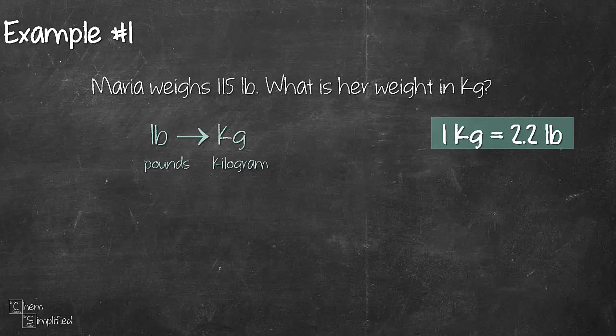To perform the conversion, let's start with what we are given which is 115 pounds. Then we multiply and draw a line across. Now what we're gonna do is we're gonna use basic algebra to do the conversion. So since we are converting from pounds to kg, that means we want to get rid of pounds. So we'll place pounds which is lb on the bottom and then we'll place kg on the top. That way we can cancel out pounds like this and that will leave us with kg.